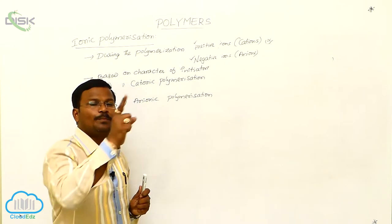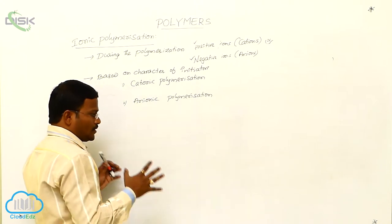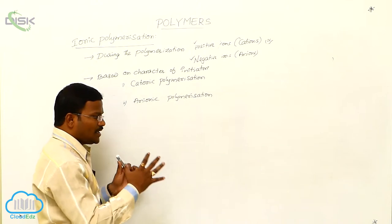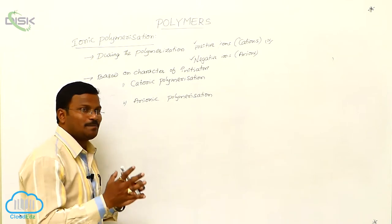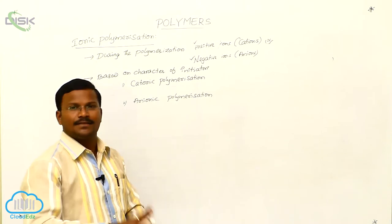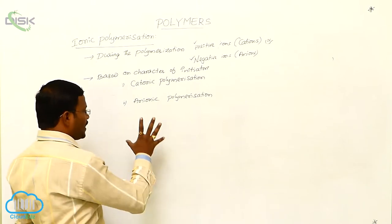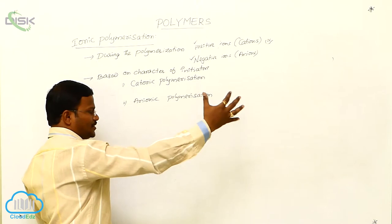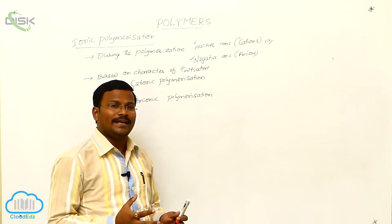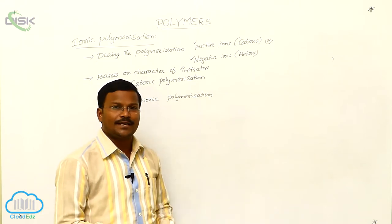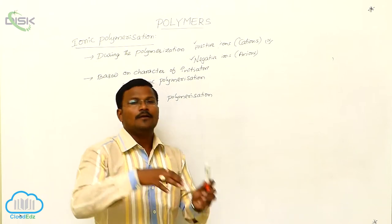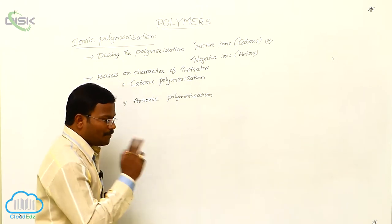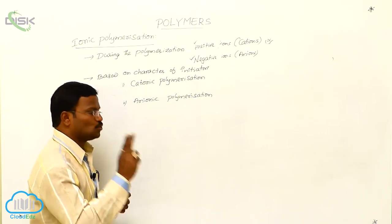Chain growth polymerization or addition polymerization generally results from unsaturated species like alkenes and alkadienes. Whenever chain growth polymerization takes place, the intermediate species or initiators formed may be ions or free radicals.